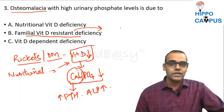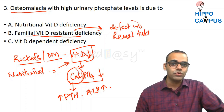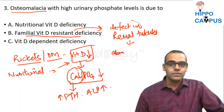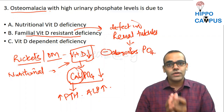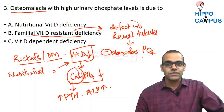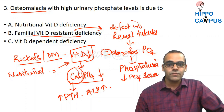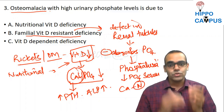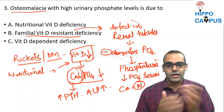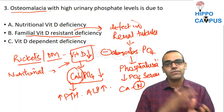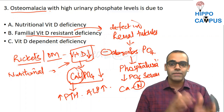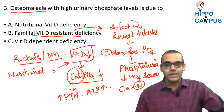In vitamin D resistant rickets, there is a defect in the renal tubules. The renal tubules are unable to absorb phosphate, so phosphate goes into the urine — this is called phosphaturia. As a result, there is decreased phosphate in the serum whereas calcium is normal. The mismatch in the calcium-phosphate ratio causes defective mineralization in the bone.